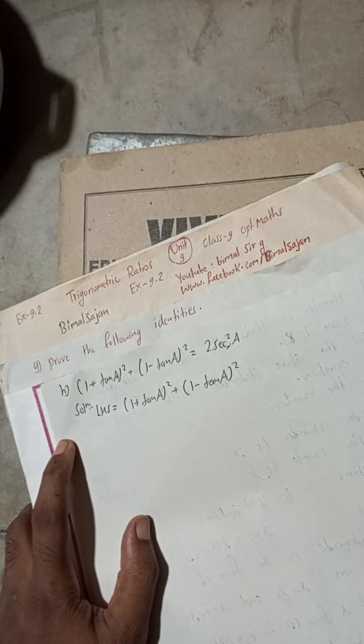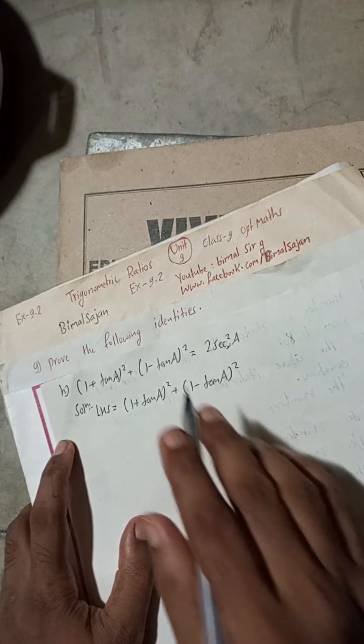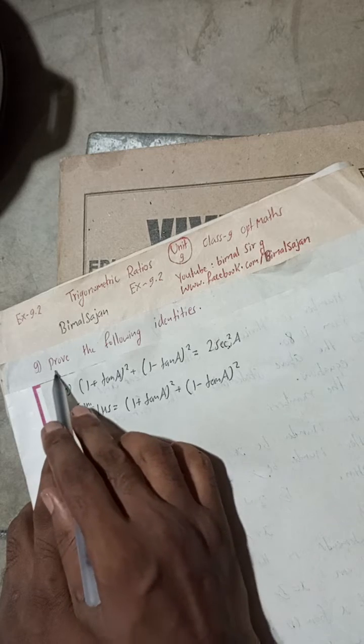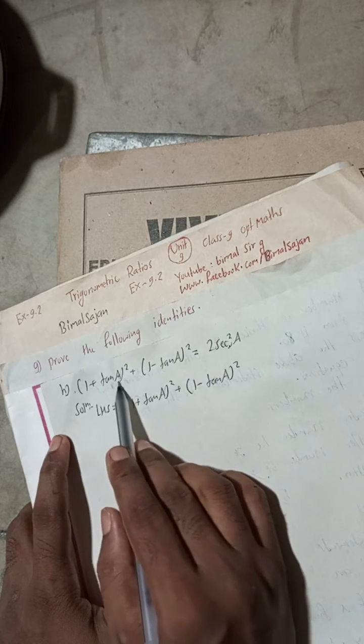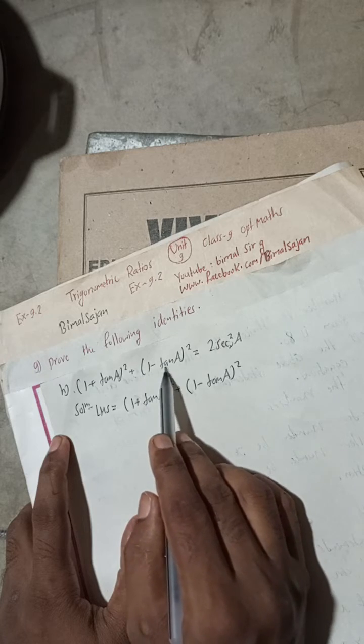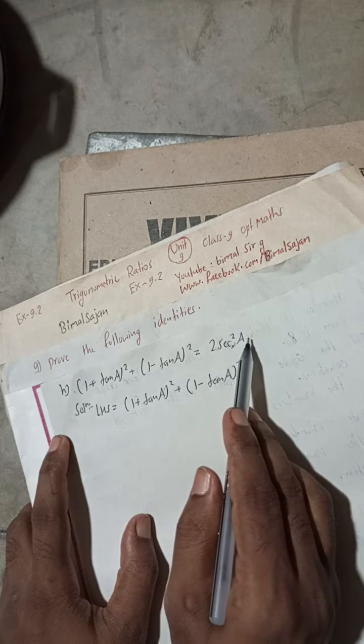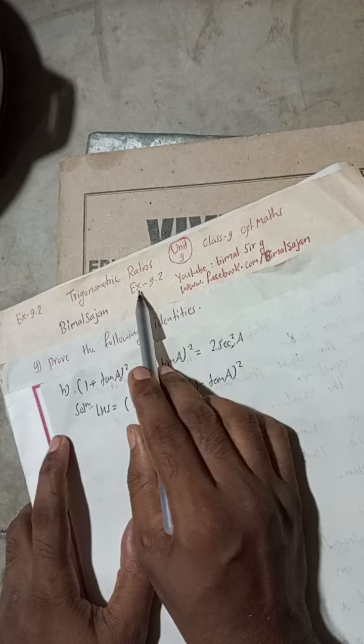Hi everybody, welcome back to Bimal Sarji YouTube channel. This is question number 9: prove the following identities. (1 + tan a)² + (1 - tan a)² is equal to 2 sec² a.